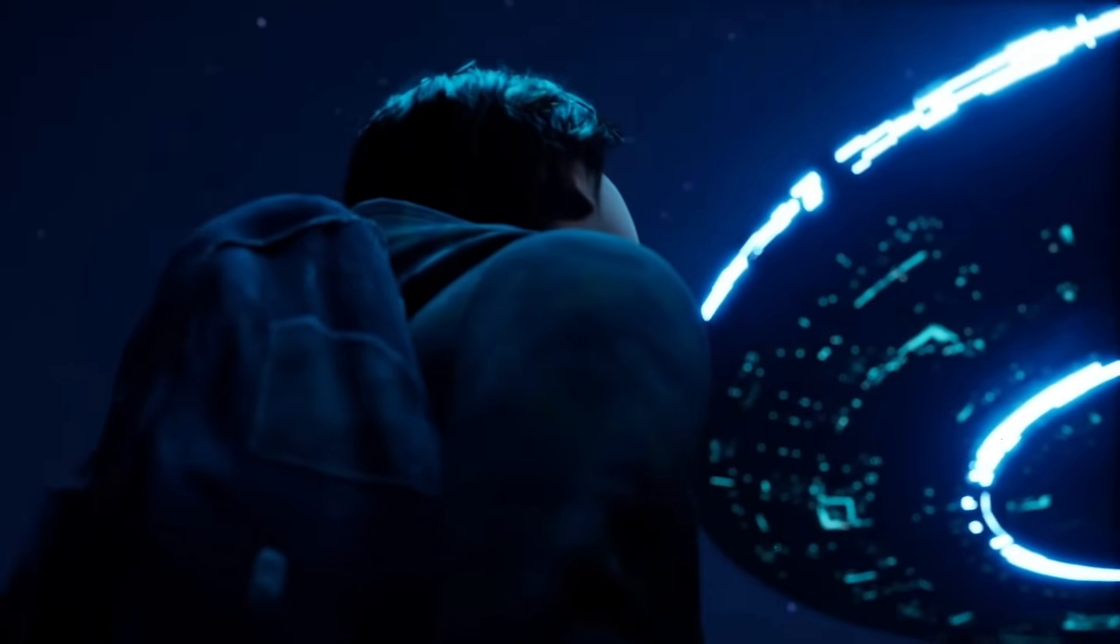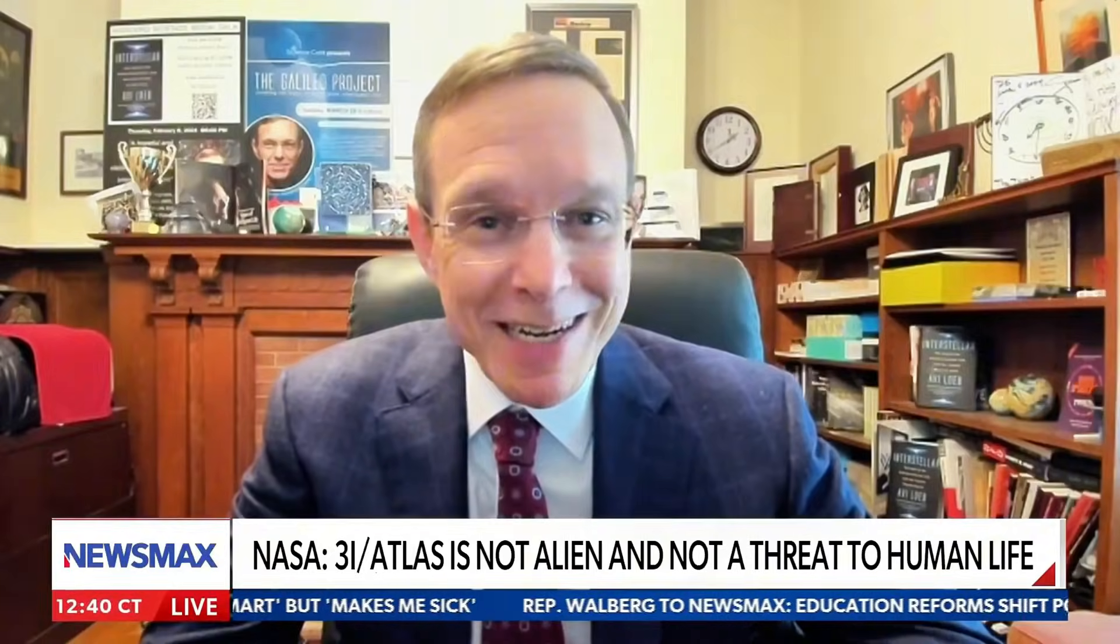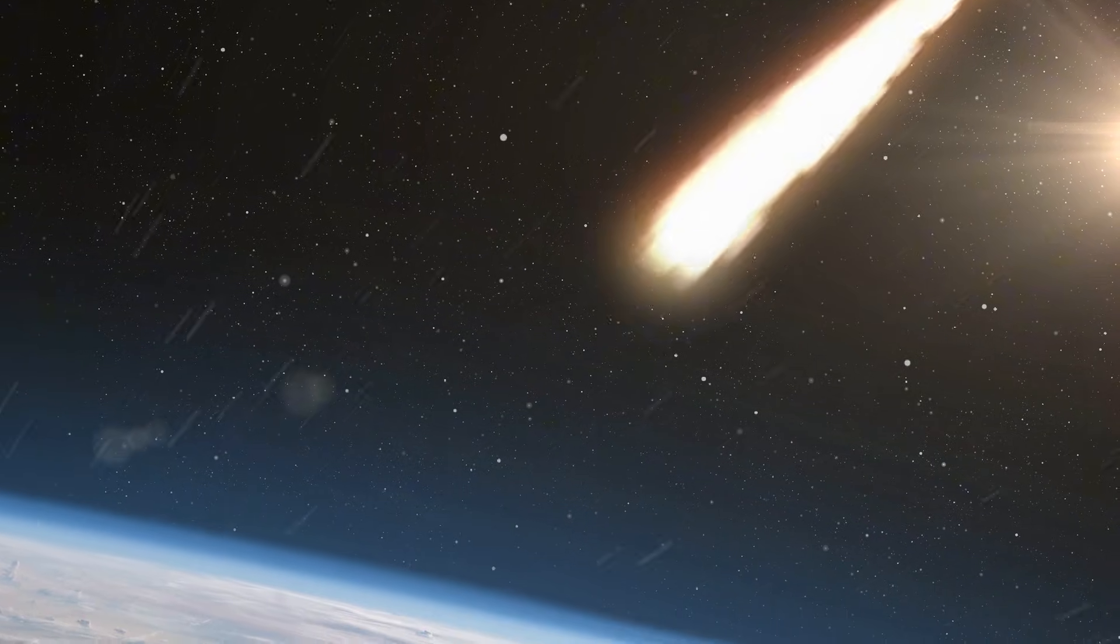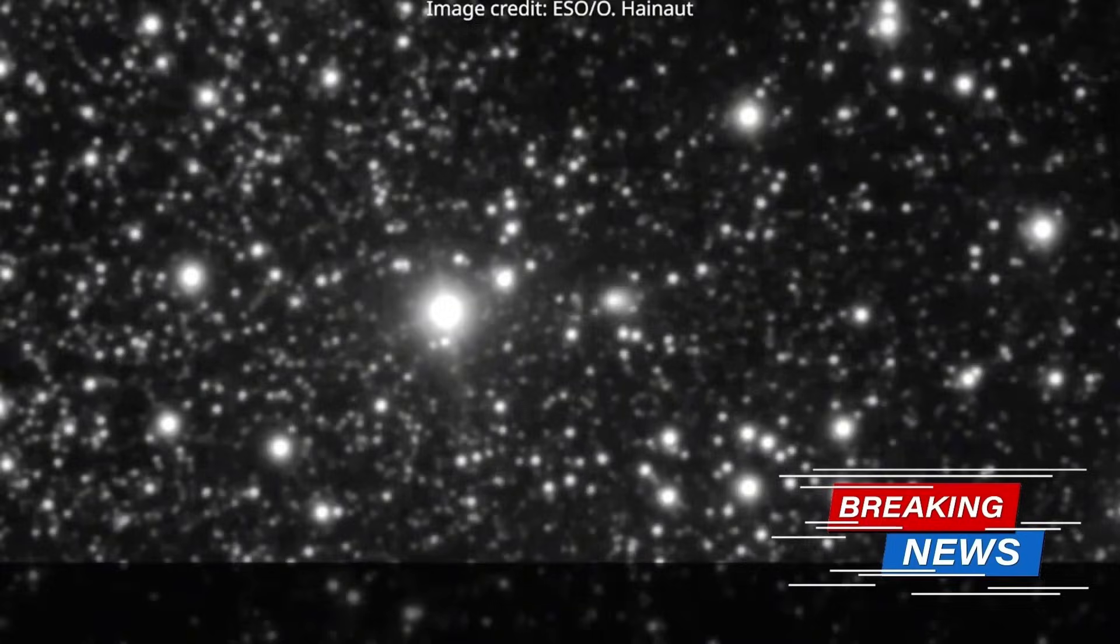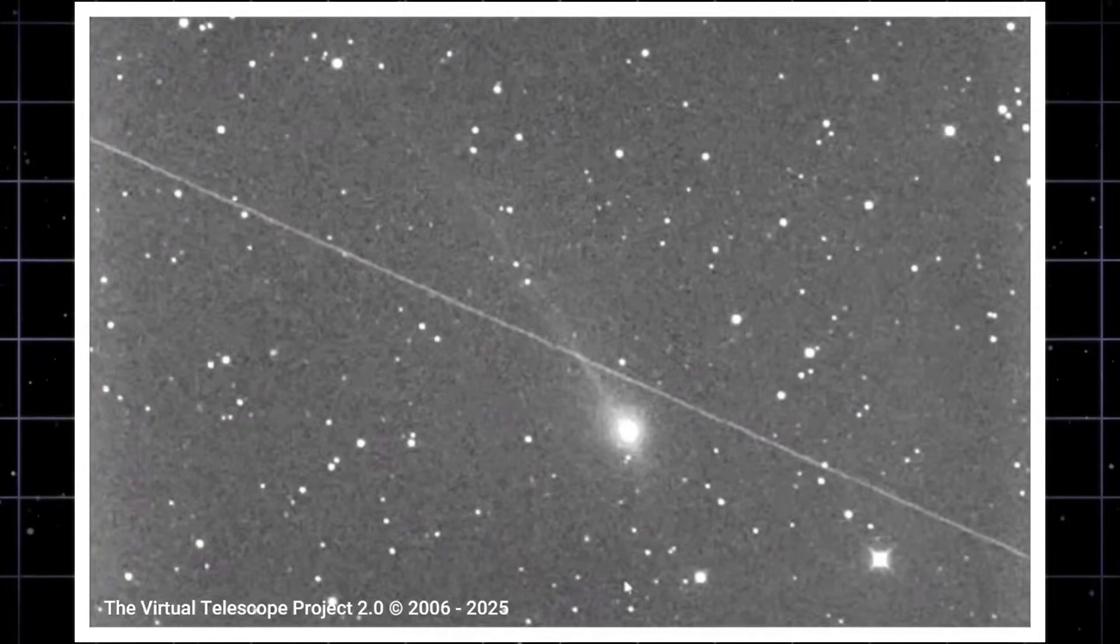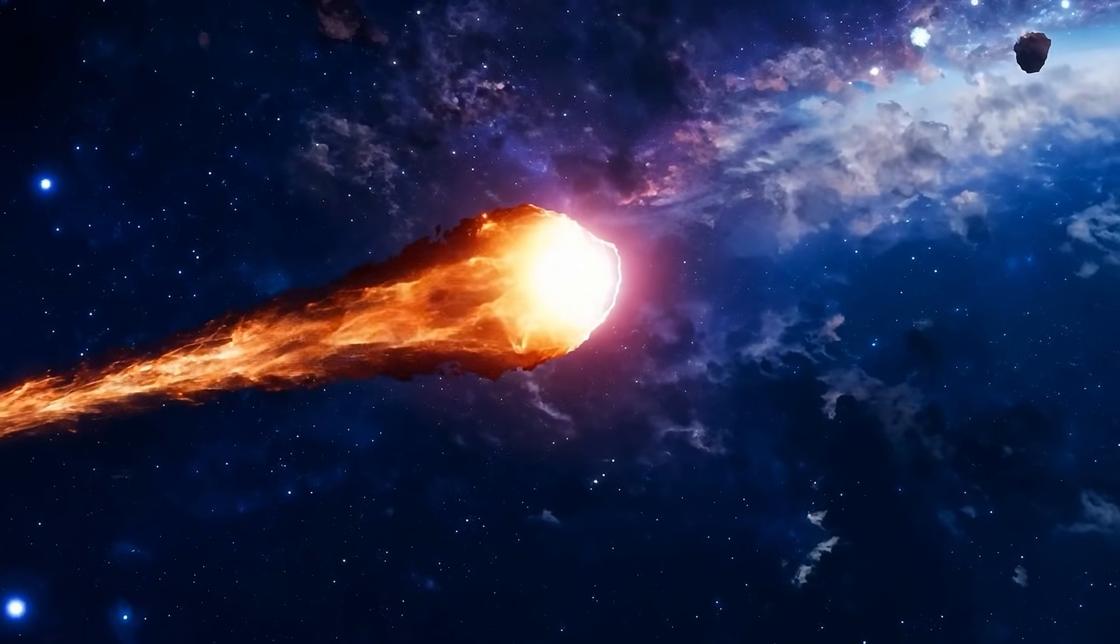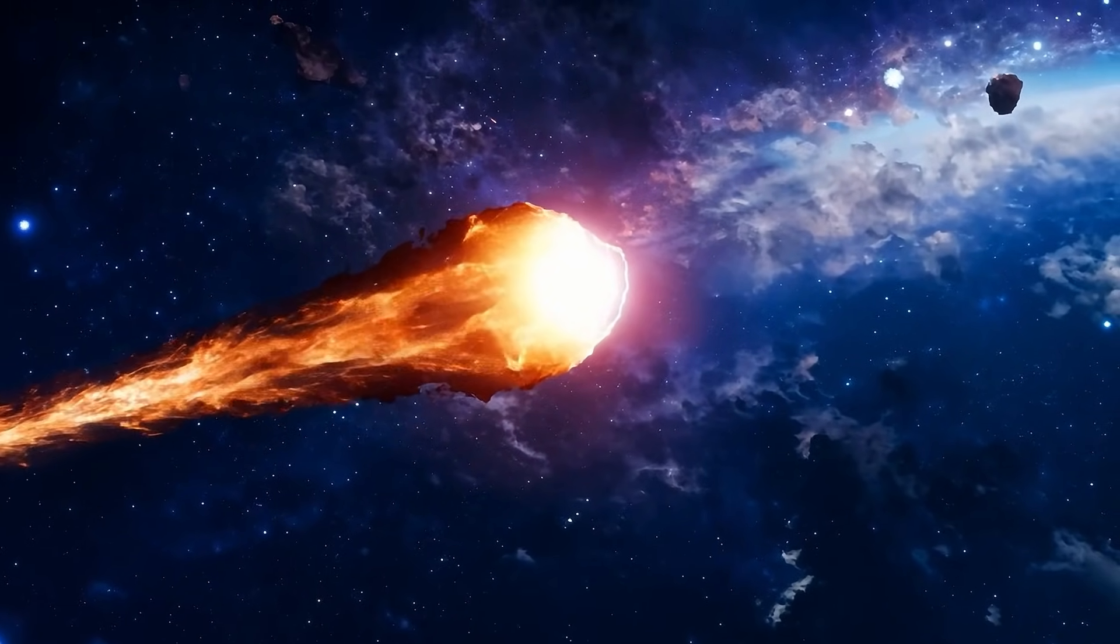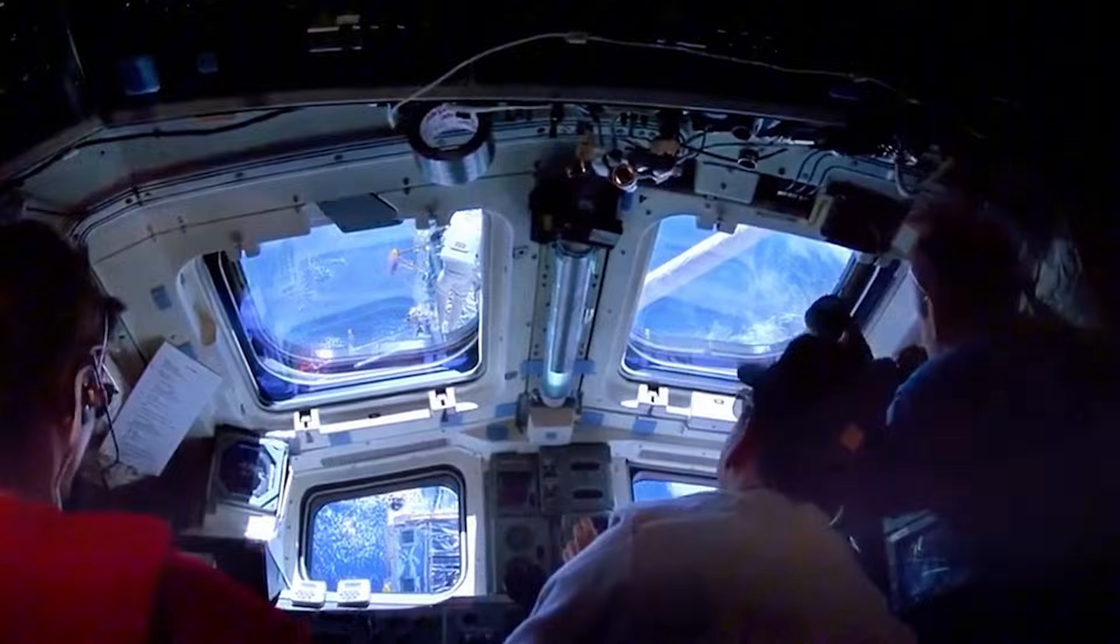3i Atlas reaches its closest point to Earth in 3 hours, at 3:02 AM December 19th. Right now, the object is 270 million kilometers away and closing. Every second brings this interstellar visitor nearer. Trajectory calculated, timing precise. Maximum approach happens tonight, early morning, and you can watch it live.